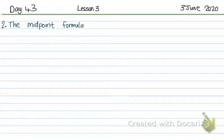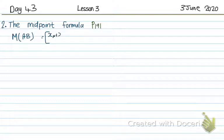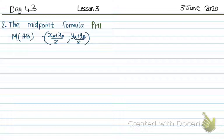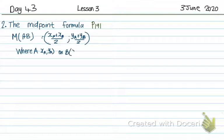To find the midpoint, I use the following formula on page 191. The midpoint between A and B is: (xA plus xB) over 2, and (yA plus yB) over 2. So what I do is add the two x-values and divide by 2, and add the two y-values and divide by 2. That's where A is (xA, yA) and B is (xB, yB).